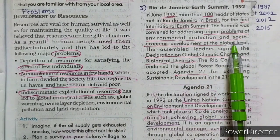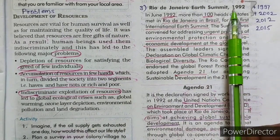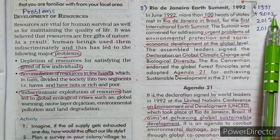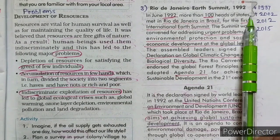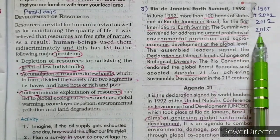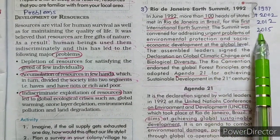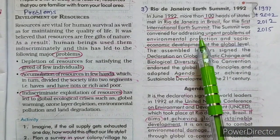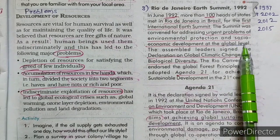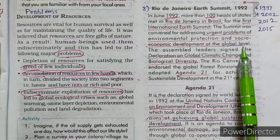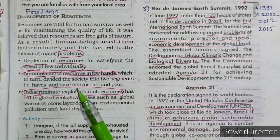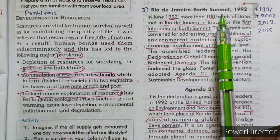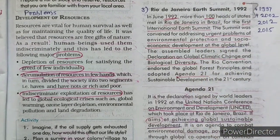This summit was organized in 1992, and after five years in 1997, again in 2002, then in 2012, and also in 2015. In those summits they discussed that not only at global level but also at national, state, and regional levels, all countries should follow the plans made by the Rio de Janeiro Earth Summit.